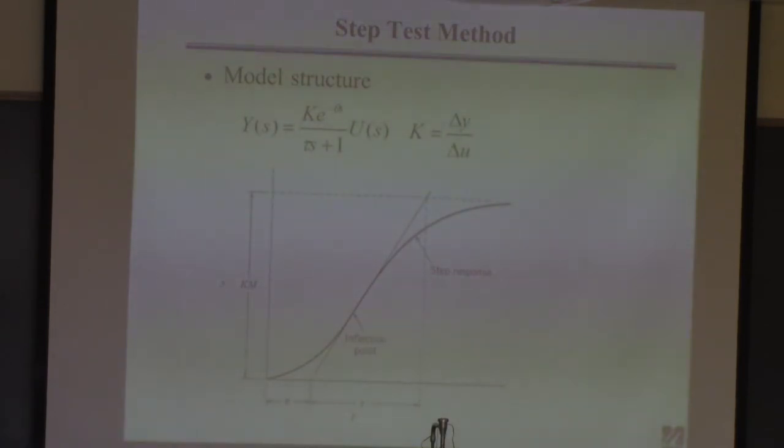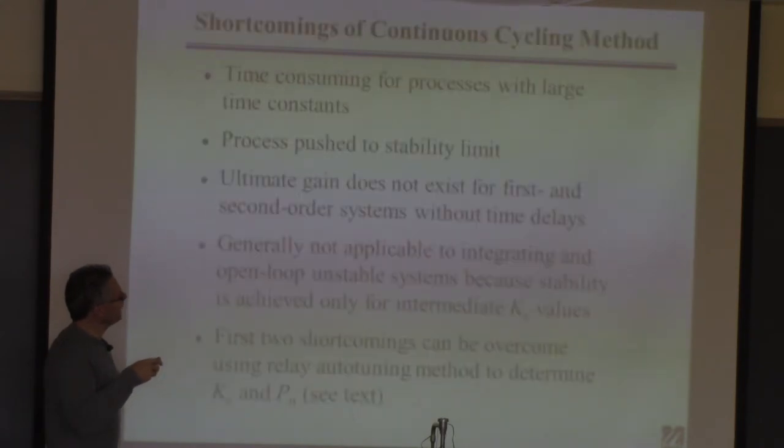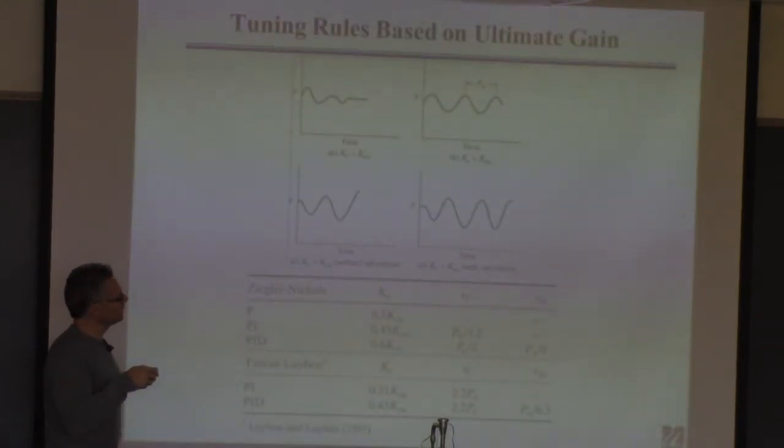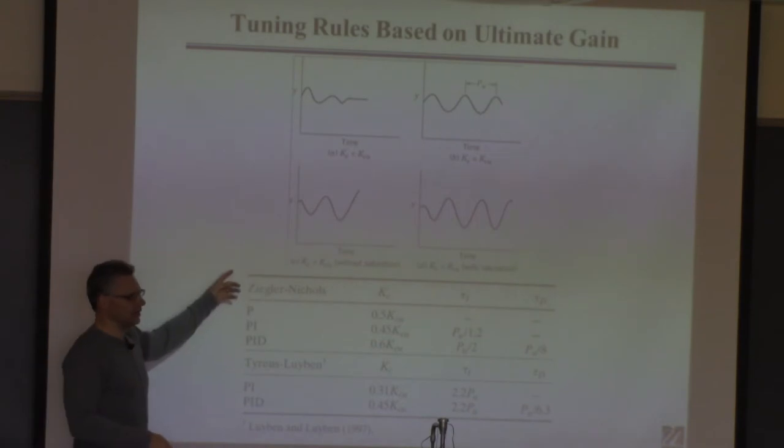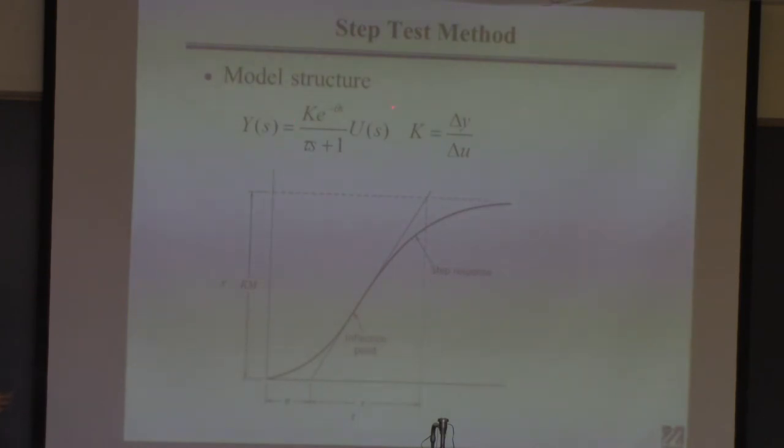So what we can do is find parameters. Let's say I want a transfer function that looks like this. Because if I have that, I can do this. For example, I could use this method. Or I could apply direct substitution of this and then get the ultimate gain in period and then do this. So let's say I'm resigned to getting a model now. I want a model that looks like this: first order plus time delay. And so what I'm going to do is what we already talked about. I'm just repeating it here. You're going to do a step test and you're going to use the data to find the k, the tau, and the theta.